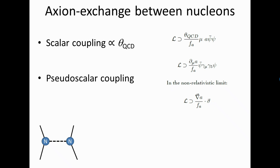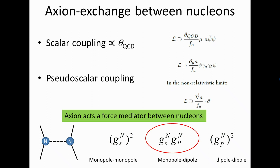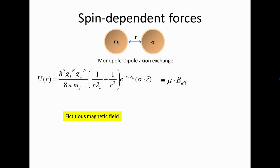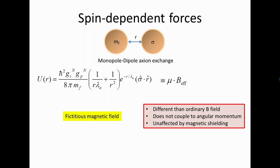Ariadne is particularly looking for the monopole-dipole coupling with this fictitious magnetic field. Importantly, this fictitious magnetic field does not obey Maxwell's equations — it's not coupling to moving charges or angular momentum — and crucially for an experimentalist, it's not screened by magnetic shielding. We can put magnetic shielding in the experiment to block ordinary magnetic fields, while this fictitious axion field can penetrate through, allowing us to get a signal.